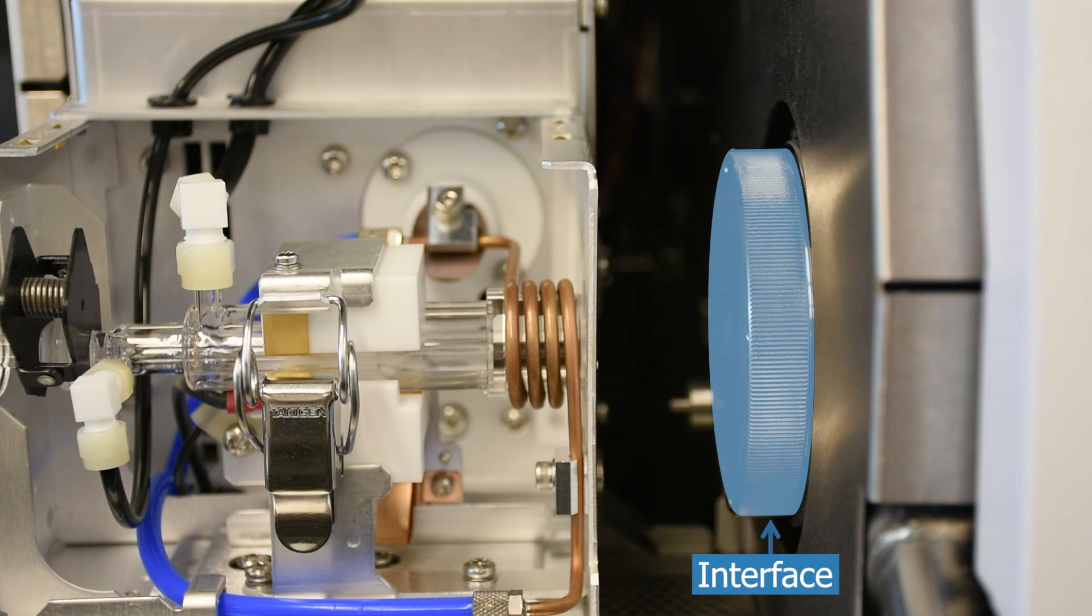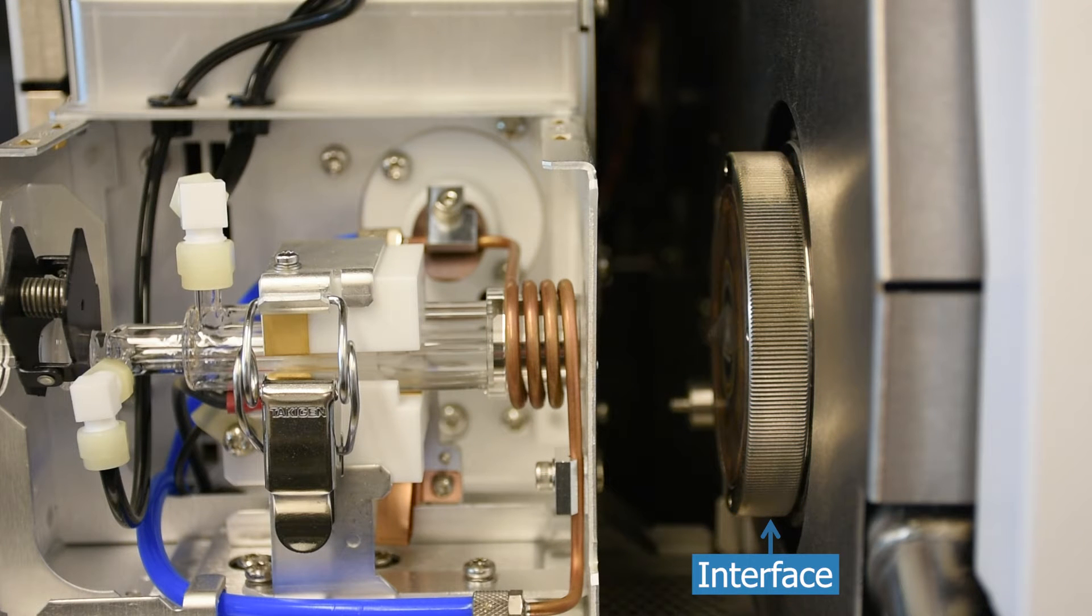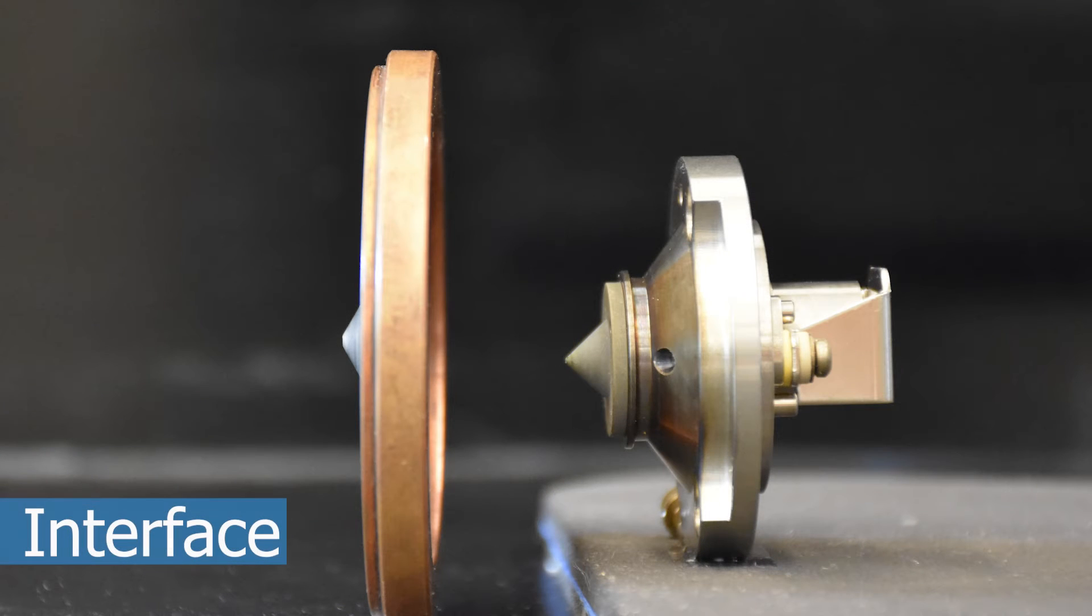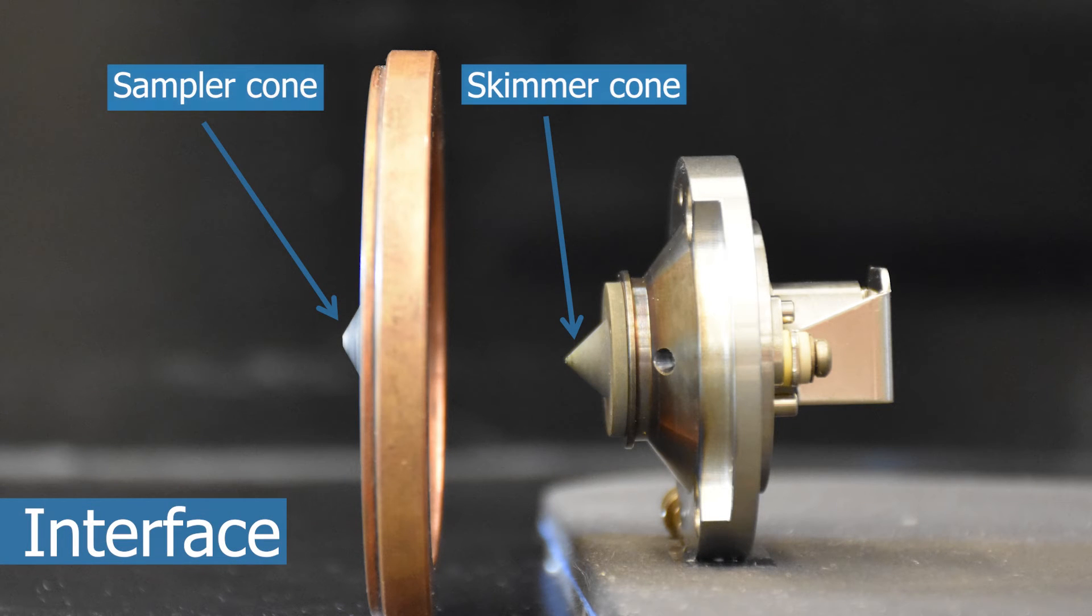The resulting analyte and argon ions move towards the interface, which couples the plasma to the mass spectrometer. The interface consists of two cones, a sampling cone and a skimmer cone.